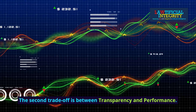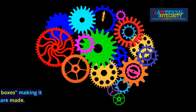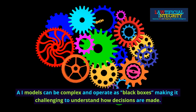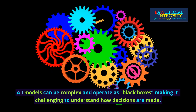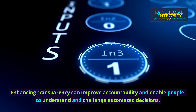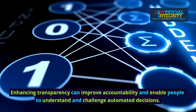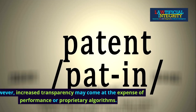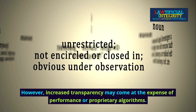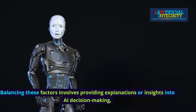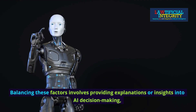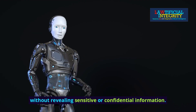The second trade-off is between transparency and performance. AI models can be complex and operate as black boxes, making it challenging to understand how decisions are made. Enhancing transparency can improve accountability and enable people to understand and challenge automated decisions. However, increased transparency may come at the expense of performance or proprietary algorithms. Balancing these factors involves providing explanations or insights into AI decision-making without revealing sensitive or confidential information.